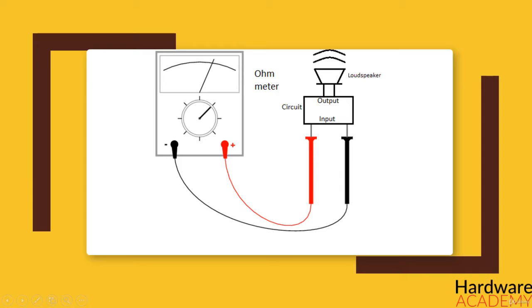Connecting an ohm meter across the input or output of any circuit only indicates the DC resistance.